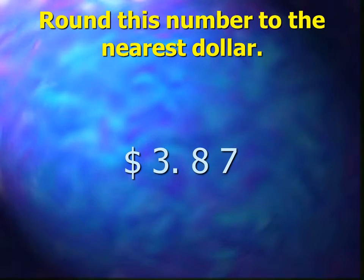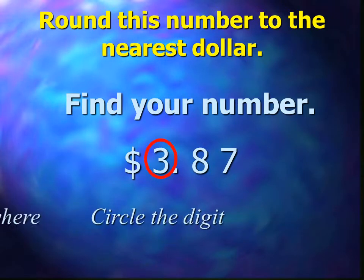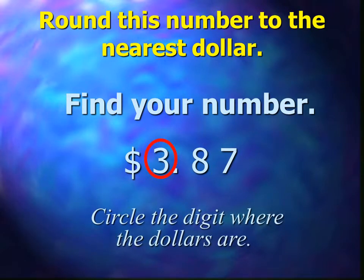Here is an example with money. Round this number to the nearest dollar. In this case, we have $3.87. If I asked you about how much money you had, you would say about what. Here is where estimation comes into play and rounding for money. First thing, find your number. Circle the digit where the dollars are — in this case, three.